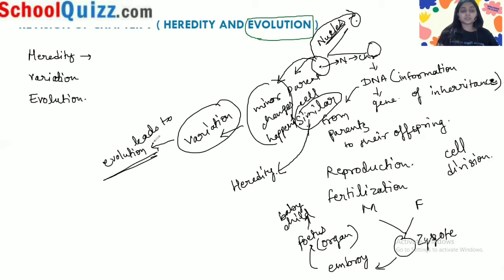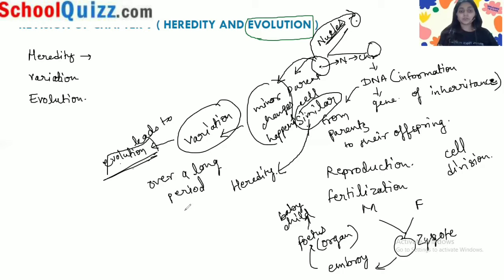So what is evolution? Evolution is not a sudden change. Evolution happened over a long period of time. First we will understand heredity and variation, then we'll take the example of evolution.